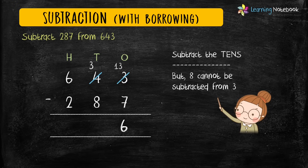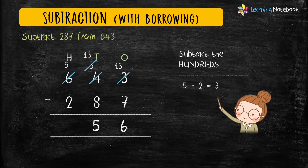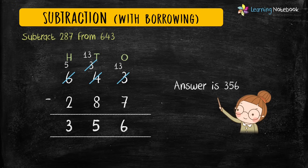Now subtract the digits at tens place, but 8 is a bigger number than 3, so 8 cannot be subtracted from 3. Again we borrow, this time from hundreds place which is 6; so 6 becomes 5 and 3 becomes 13. We subtract 8 from 13 and get 5. Then subtract hundreds place: 5 minus 2 equals 3. Our answer is 356.